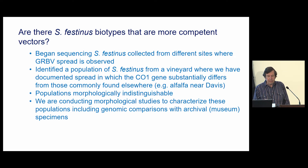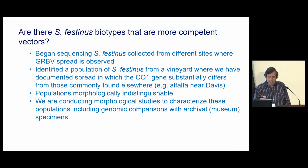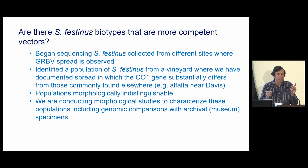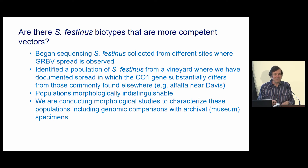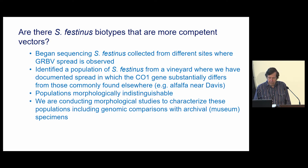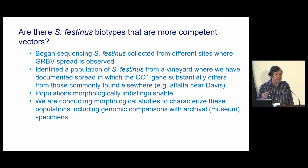We began sequencing a lot of these Spissistilus that we were collecting from different sites. We did find a population from a vineyard where we have documented spread for the last three or four years, in which their CO1 gene substantially differs from those commonly found elsewhere — for example, from three-cornered alfalfa hopper collected from alfalfa here at Davis. When we look at the insects themselves, the populations are morphologically indistinguishable, so we can't tell them apart until we examine their genetics. That doesn't help us with transmission studies, so it's a complicating factor we're trying to work through.